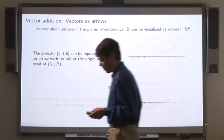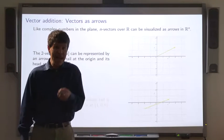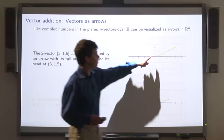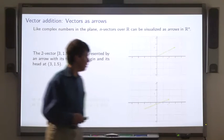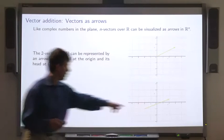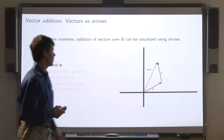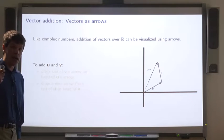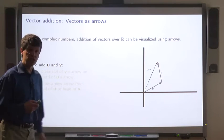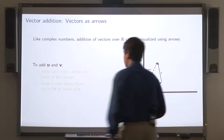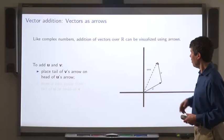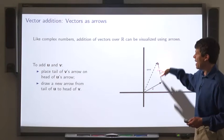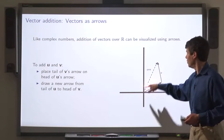Now, like complex numbers, we can represent vectors as arrows in the plane. So this vector 3, 1, 5 can be represented with its tail at the origin and its head here. It can equally well be represented with its tail over here. Now, addition can be interpreted as an operation on arrows, just as in the case of complex numbers. To add vectors u and v, you place the tail of v's arrow at the head of u's arrow, and now you draw a new arrow from the tail of u to the head of v.